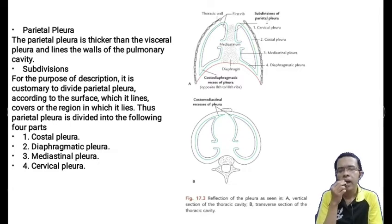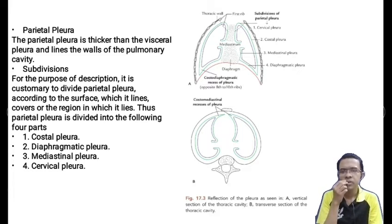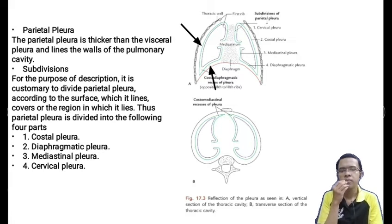The pleura is divided into two types: the outer one is called the parietal pleura and the inner one is called the visceral pleura. The parietal pleura is thicker than the visceral pleura and lines the wall of the pulmonary cavity. For description, the parietal pleura is divided into four parts according to the surface it lines: costal pleura, diaphragmatic pleura, mediastinal pleura, and cervical pleura.